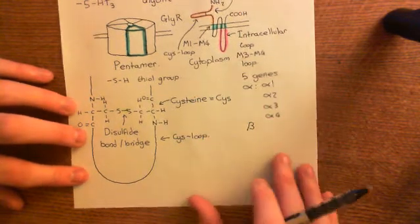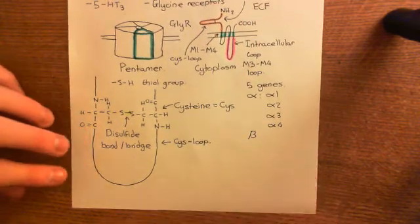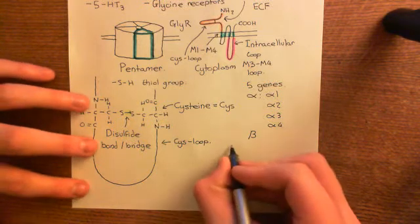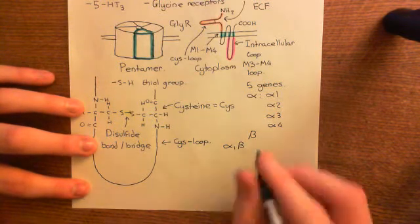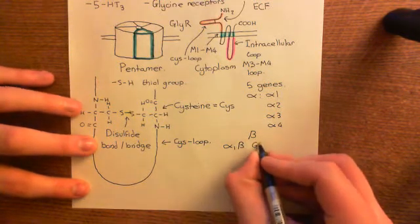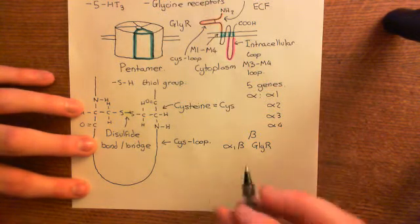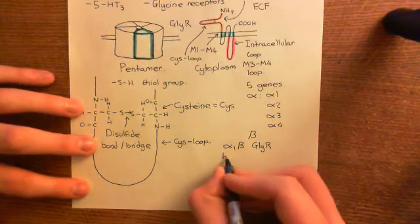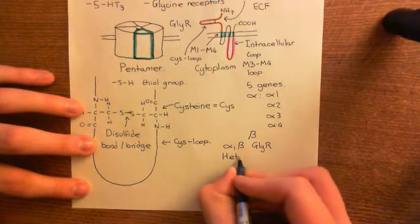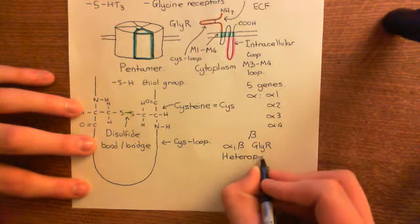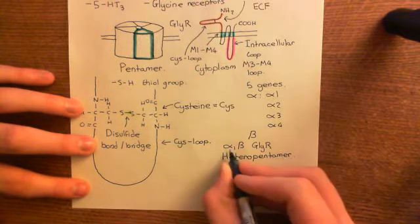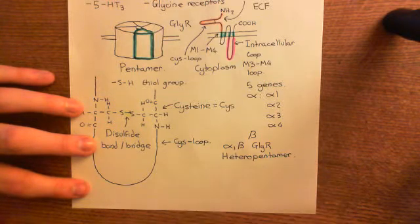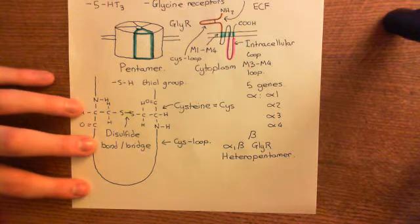The form of the glycine receptor that is really important, and is the form that would be involved in the inhibition of alpha motor neurons that I've described to you, is what's known as the alpha-1 beta form of the glycine receptor. So, it's called the alpha-1 beta glycine receptor. So, it is a heteropentamer, which means that the subunits you use to make the pentamer are not all the same. You're using alpha-1 and beta subunits, so you're using two separate subunits, and that's why it's called a heteropentamer.